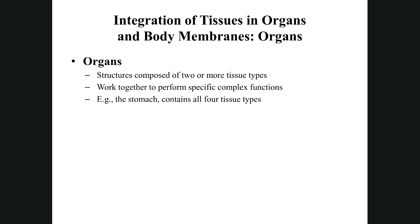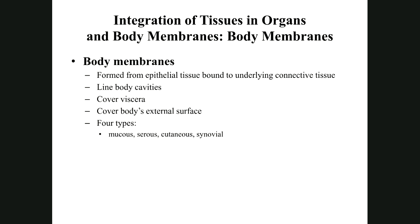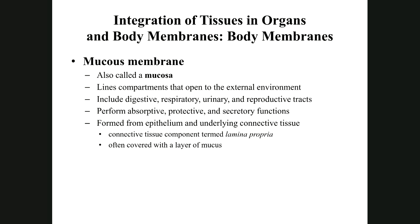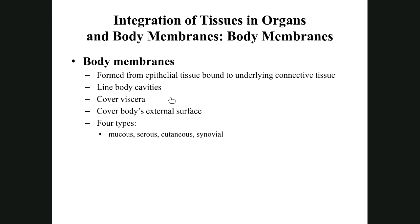Organs are composed of two or more tissues working together for specific, complex functions. Each organ performs a more complicated, specific function — organs are groups of tissues working together. In the next chapter, the integument (skin) is a good example of how all four tissue types work together.